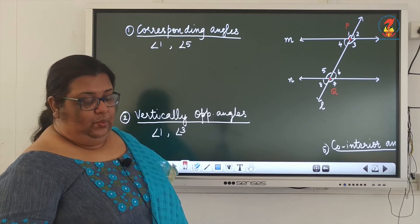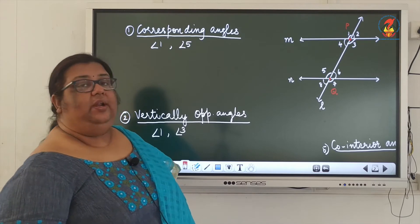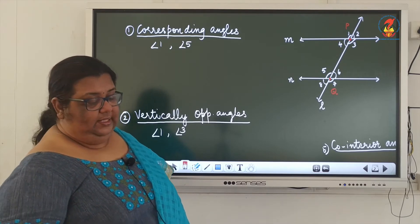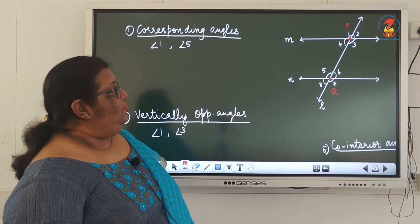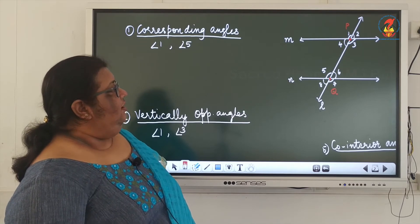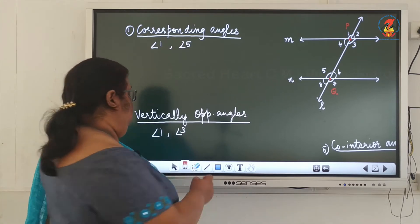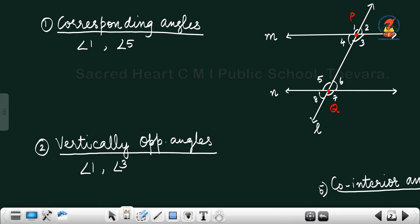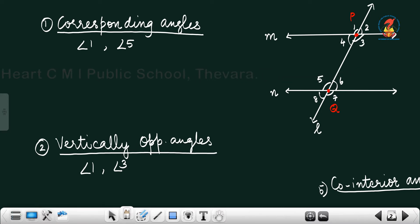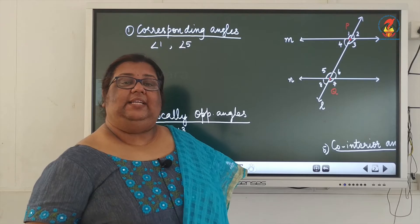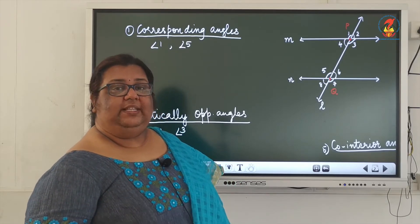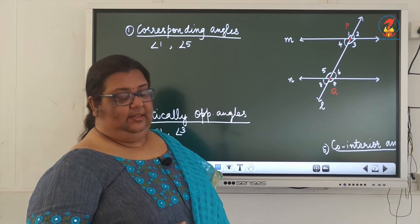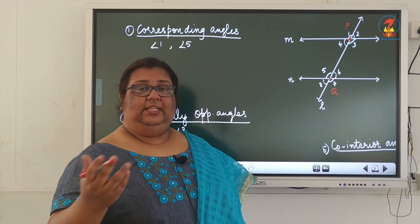A transversal is a straight line which cuts two or more lines at different points. Here, consider two lines m and n. A transversal l is cutting at two points P and Q. Then we get 8 angles, marked as 1, 2, 3, 4, 5, 6, 7, and 8. Let's see what these pairs of angles are.